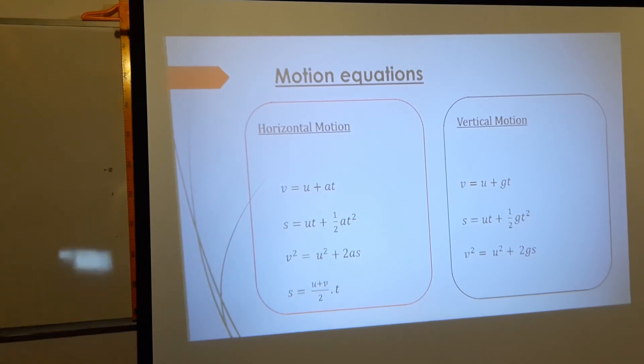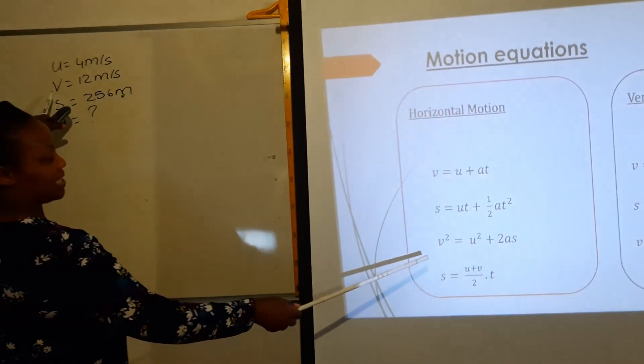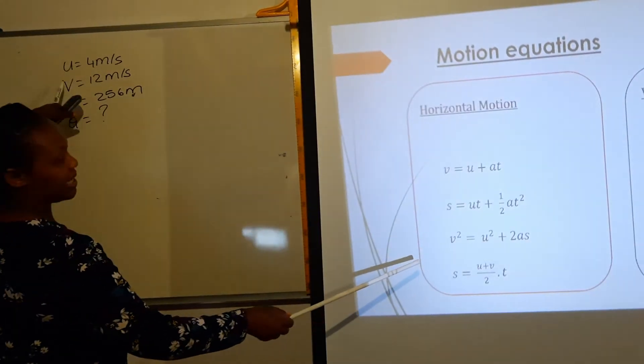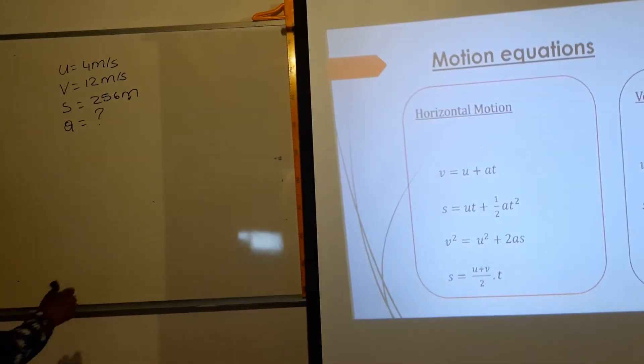Then we move to the third equation. We're looking for a, but we need to have v as well. V is given. Is u given? Yes. Is s given? Yes. So we can use the third equation.